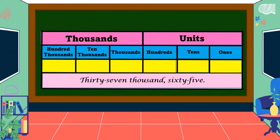Next example: 37 thousand, 65. First, we put the digits in the table — 37 in the thousands period and 65 in the units period. In standard form, this is 37,065.